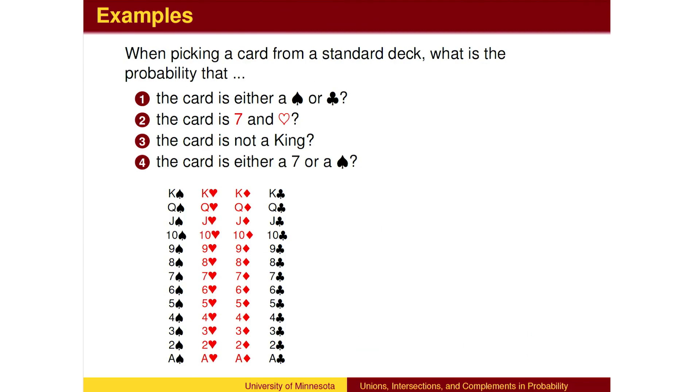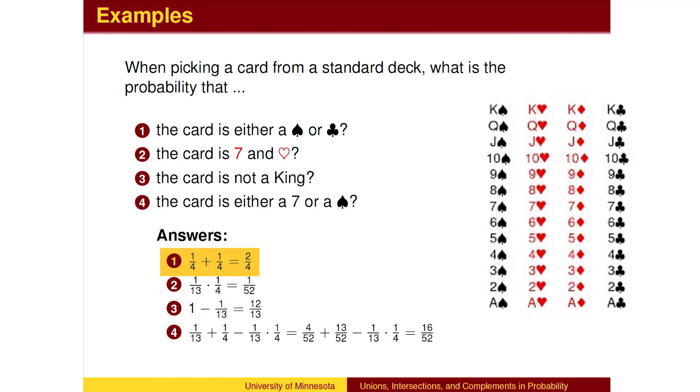Here are some examples. You may wish to pause the video to see if you can find these probabilities. There are 4 suits, so 1 quarter of the cards are spades and 1 quarter of the cards are clubs. Since these are mutually exclusive, the word OR means add, so we get 2 fourths.